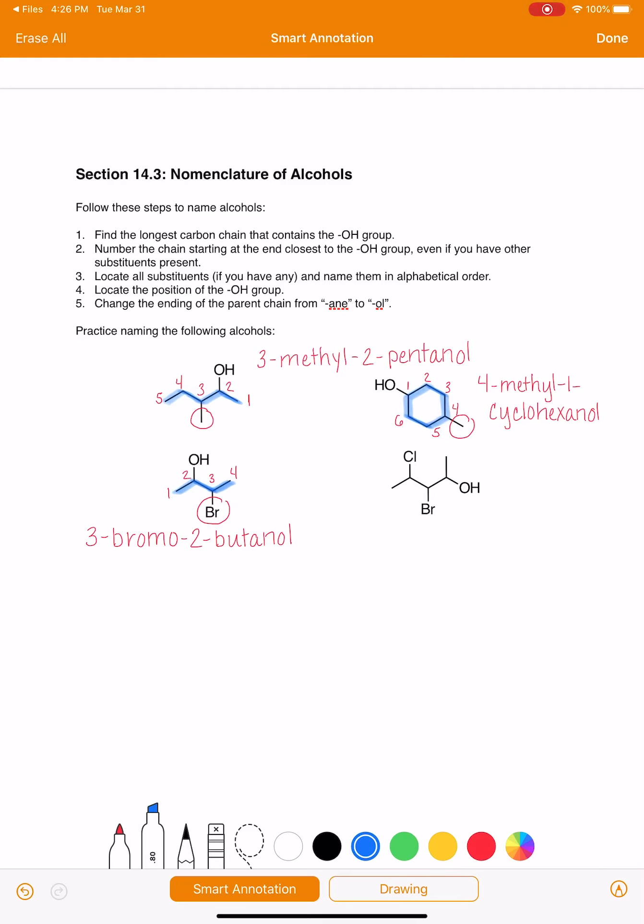Last but not least, this is our longest continuous chain of carbons. We want to start numbering on the right hand side because the OH group is on the right hand side. That's going to be 1, 2, 3, 4, 5. This molecule has two substituents on it. It has a chlorine on four and a bromine on three.